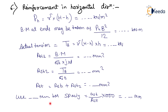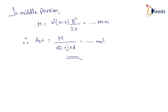Use bars with spacing equals (small AST upon capital AST) into 1000, in mm. In the middle portion, M equals gamma (H minus h) B² upon 24, in kilonewton-meter. Therefore, AST equals M upon (sigma ST into J into D), in mm².